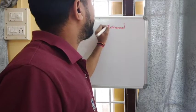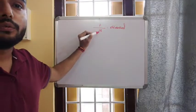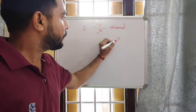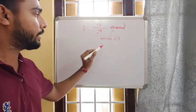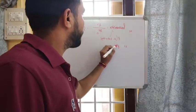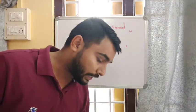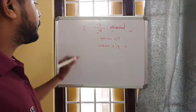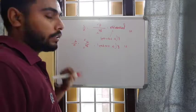The probability of choosing a Saturday is four out of 30, which reduces to two by fifteen. For number B, the probability of choosing a Sunday: the fourth, eleventh, eighteenth, and twenty-fifth are Sundays — four Sundays out of 30 days. So probability of Sunday is also four by 30, which gives two by fifteen.